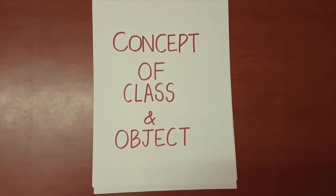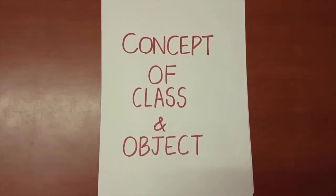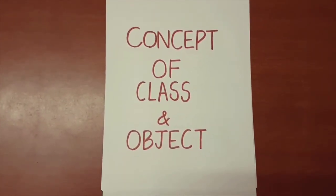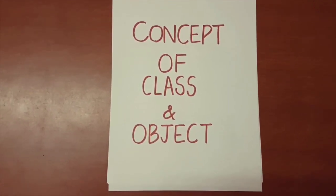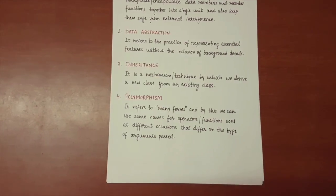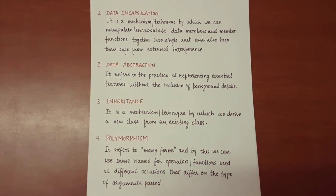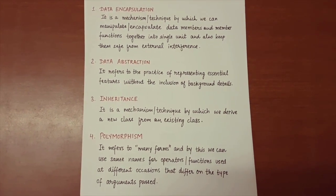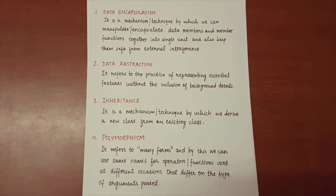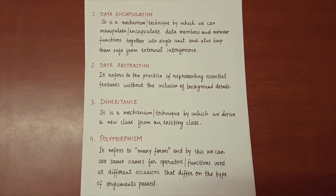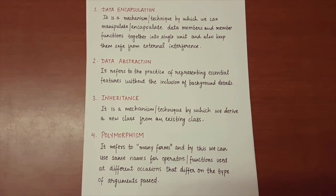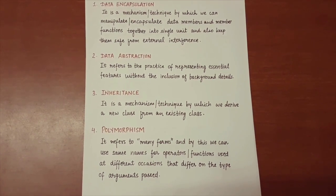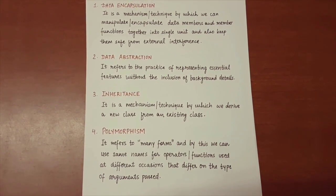Today in this video we are going to look at the concept of class and object. Before discussing class and object, we look at some important points about object oriented programming in C++. The first is data encapsulation, which is a mechanism by which we can encapsulate data members and member functions together into a single unit and also keep them safe from external interference.